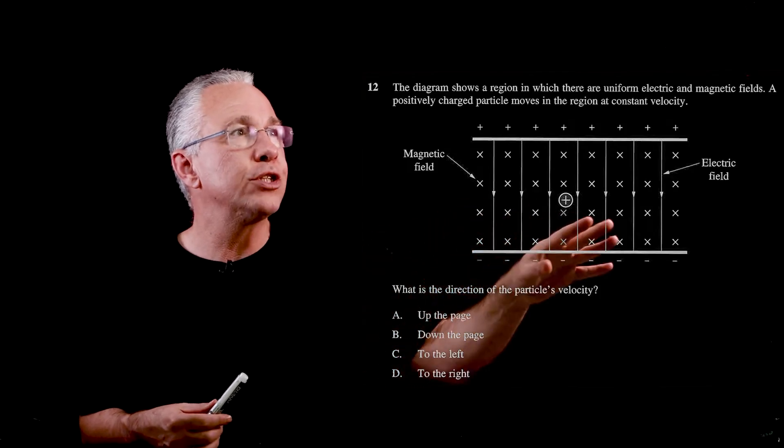Since the forces are equal we have constant velocity. The magnetic field lines go into the page. Using the right-hand rule, orienting the fingers toward you to represent the magnetic field direction, and needing an upward force, the thumb — representing the direction of motion — points to the right from your perspective. Therefore our answer is D.